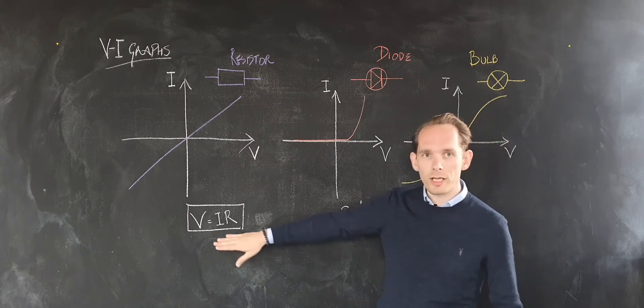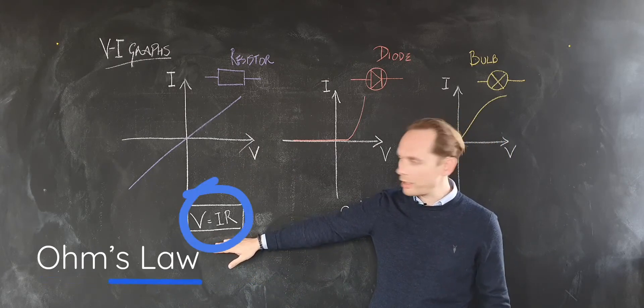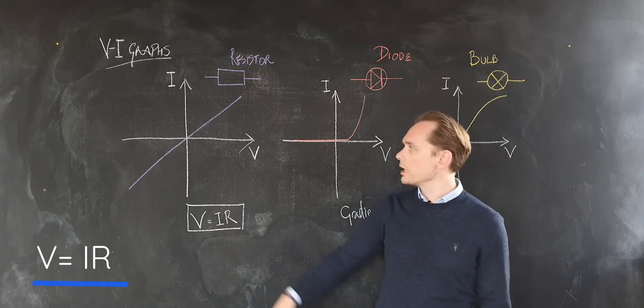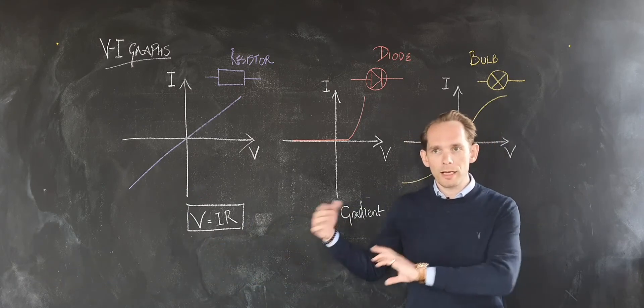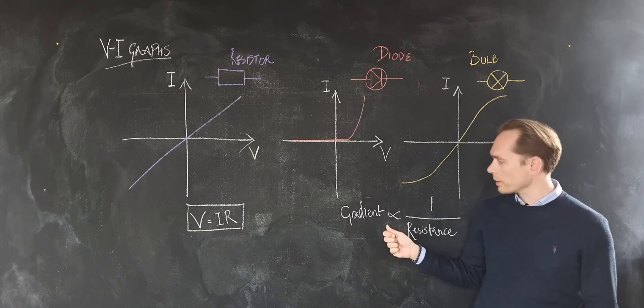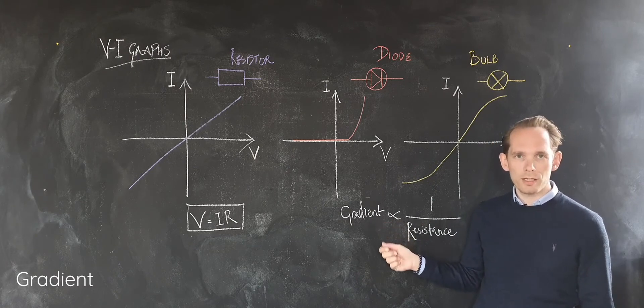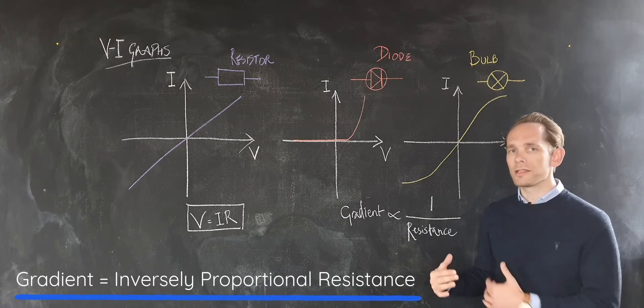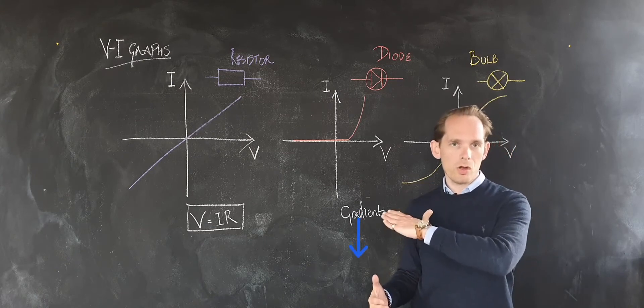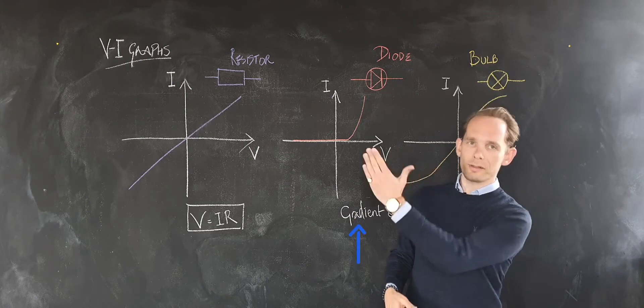The next thing is to quickly look at Ohm's law that governs this kind of behaviour: V equals IR. If you think about that and reinterpret it a different way, you get to the conclusion that the gradient of the line is inversely proportional to the resistance. So high resistance means a low gradient, and low resistance means a high gradient.